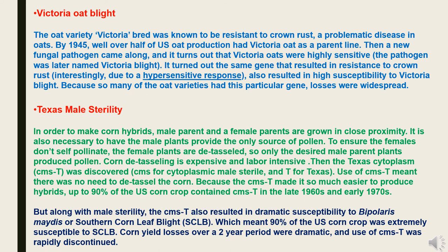Next is Victoria Oat Blight. The oat variety Victoria was known to be resistant to crown rust, a problematic disease in oats. By 1945, well over half of U.S. oat production had Victoria oat as a parent line. Then a new fungal pathogen emerged, and it turned out that Victoria oats were highly sensitive to it — the pathogen was later named Victoria blight. Interestingly, the same gene that conferred resistance to crown rust, due to a hypersensitive response, resulted in high susceptibility to Victoria blight. Because so many oat varieties shared this particular gene, losses were widespread due to monoculture cultivation practices.